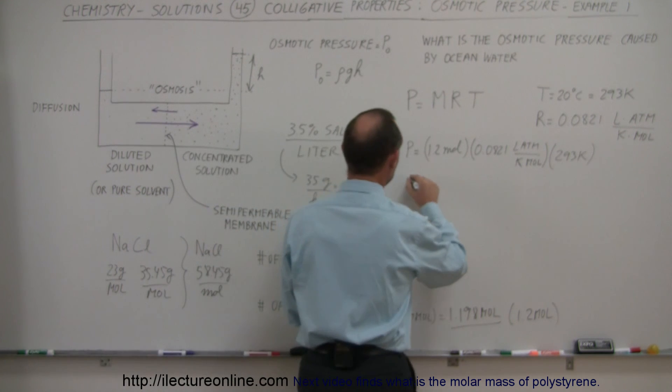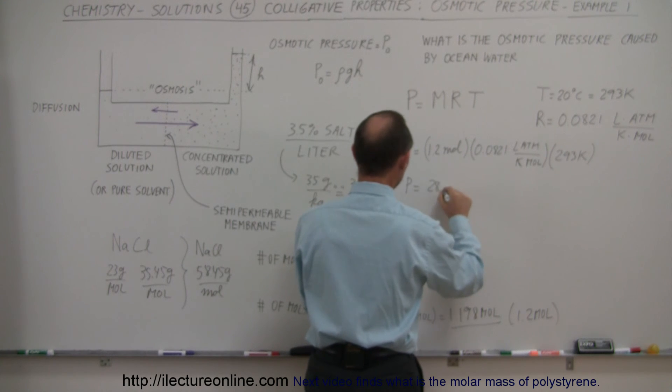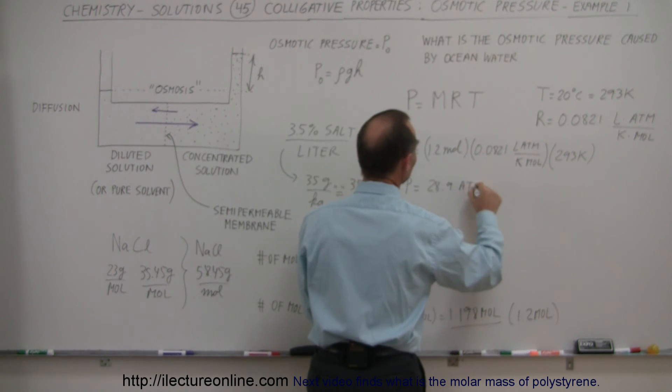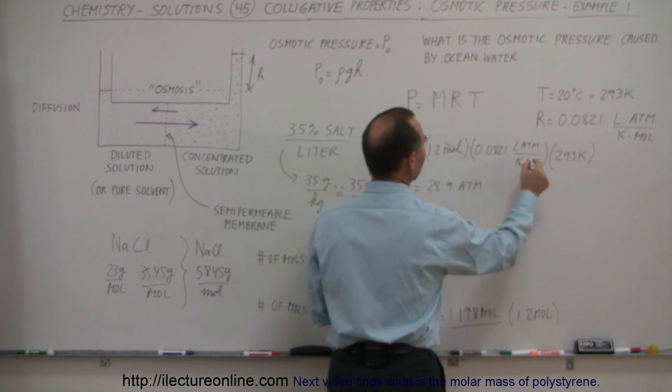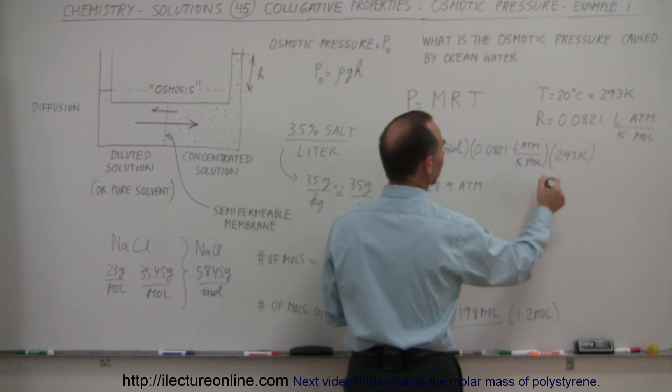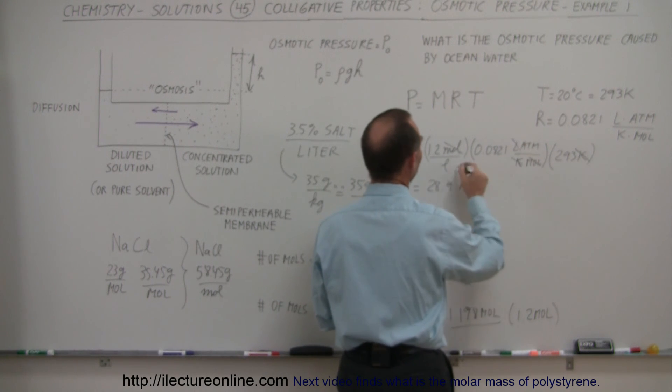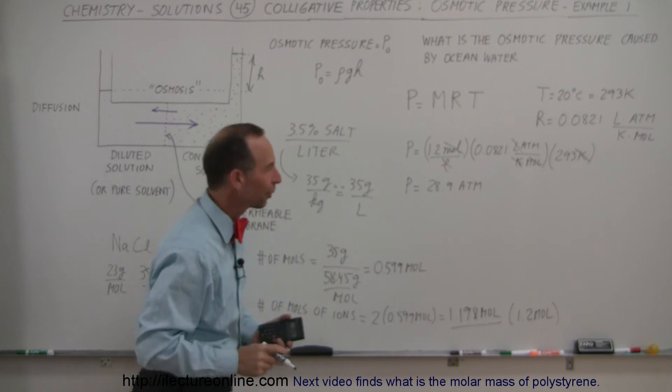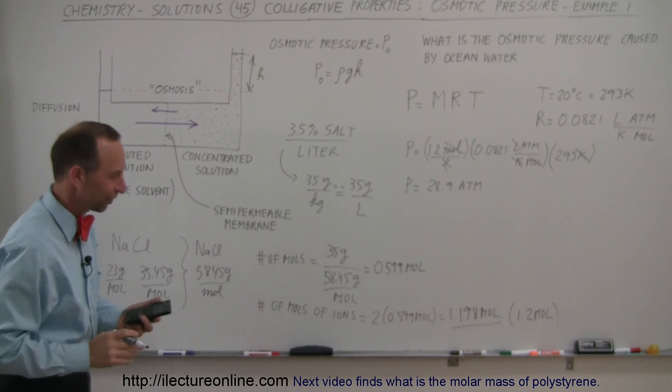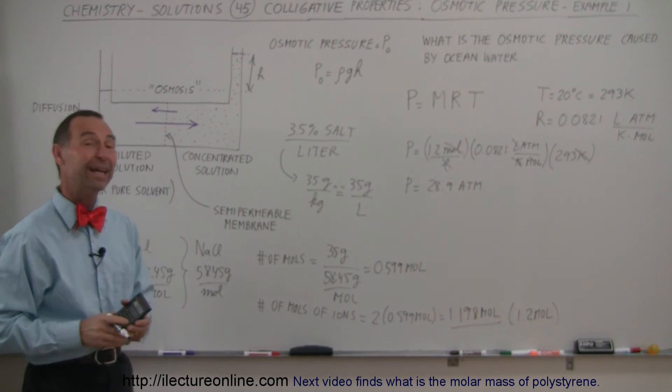and the pressure equals 28.9 atmospheres. Notice that the moles cancel out, the Kelvin cancel out. The liter would be moles per liter, so the liters cancel out. I was looking for how the liters cancel out, we're left with atmospheres. Okay, so 28.9 atmospheres, which is an enormous osmotic pressure.